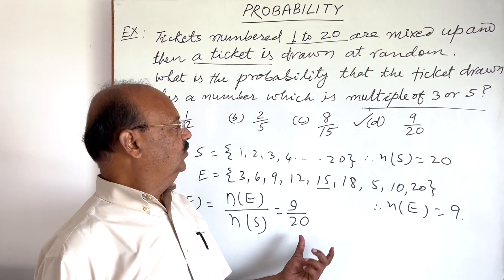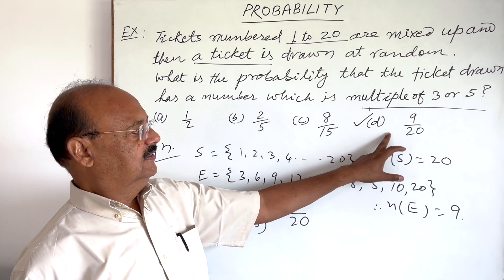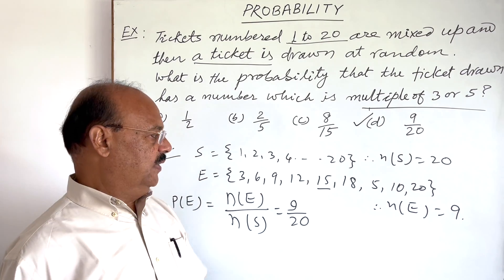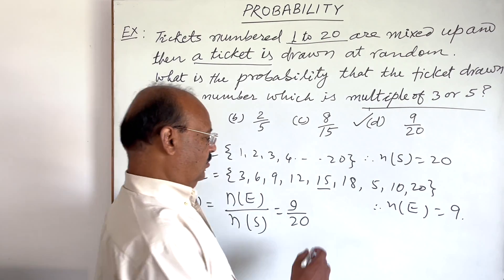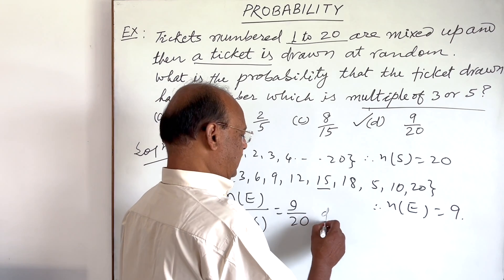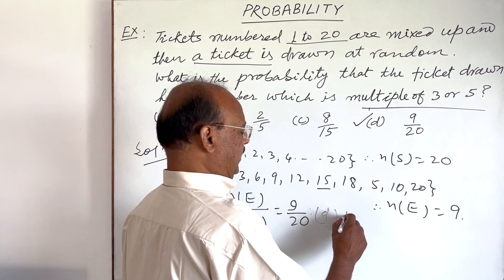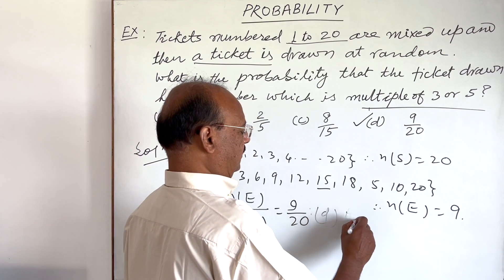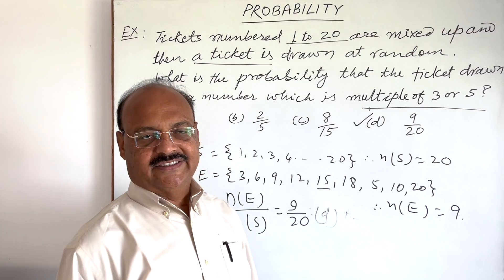So which option is correct? Option D is correct: 9 by 20. So our answer is D. This is the answer.